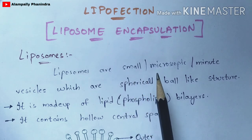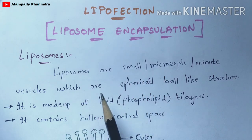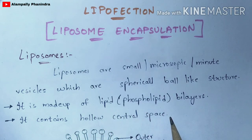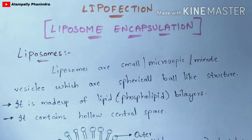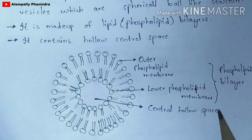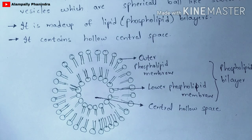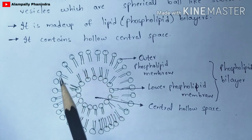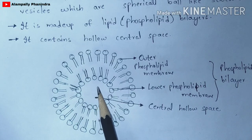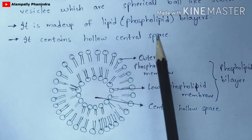Liposomes are small, microscopic, or minute vesicles which are spherical, ball-like structures. They are made up of lipid, also called as phospholipid bilayer, and contain a hollow central space. If you see the diagram properly, you can understand these statements. Liposomes are small, spherical, and microscopic in nature and can be visible only with the help of a microscope.